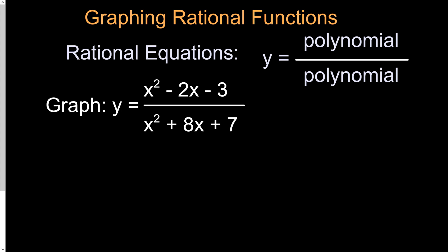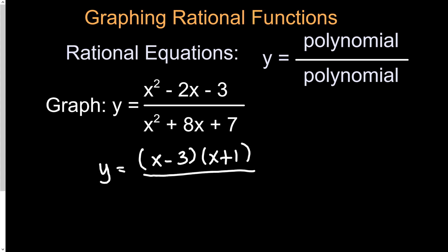The first thing we should do is factor the top and bottom. On top it's going to be x minus 3 times x plus 1. And on bottom it's going to be x plus 7 times x plus 1.